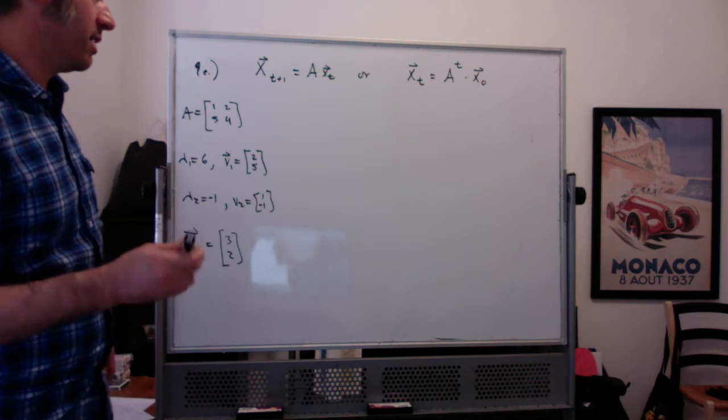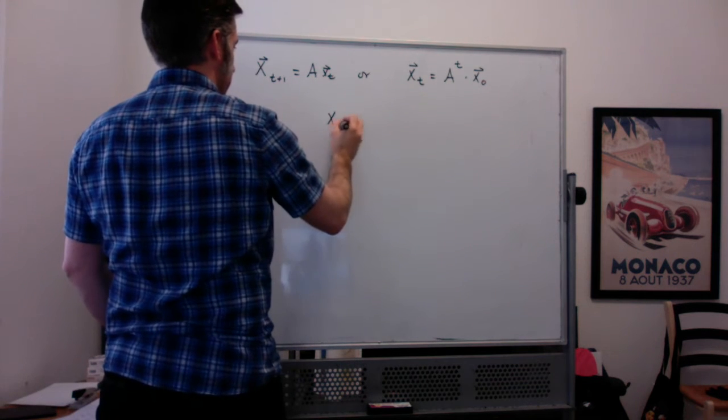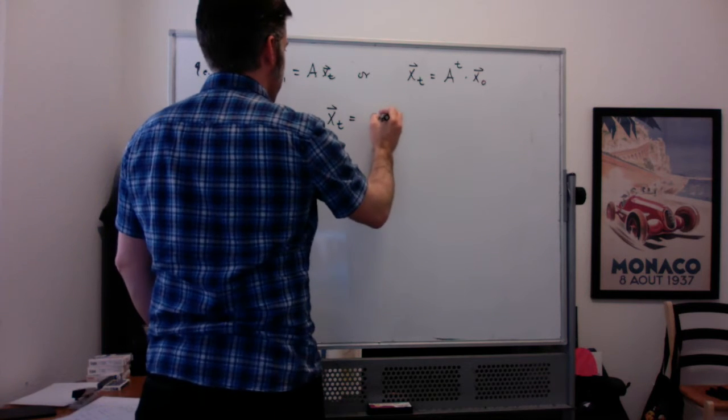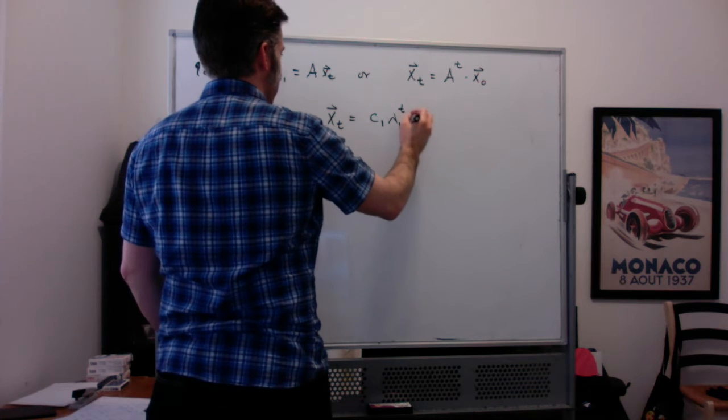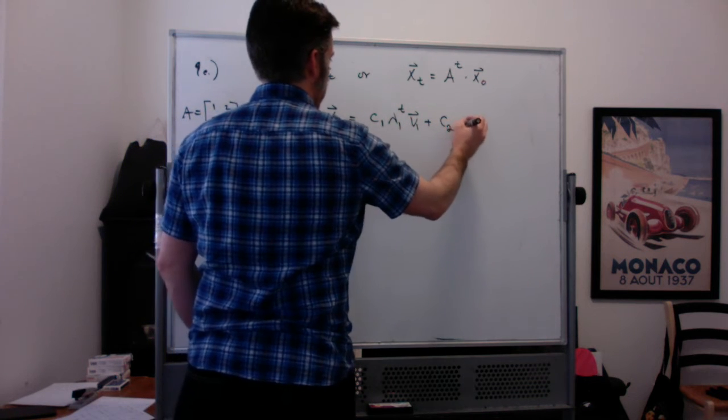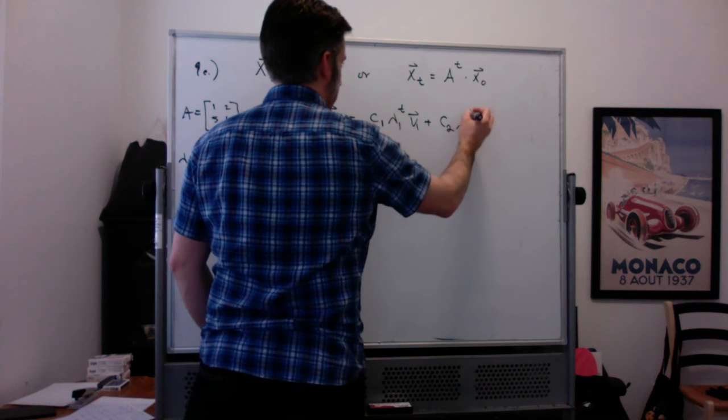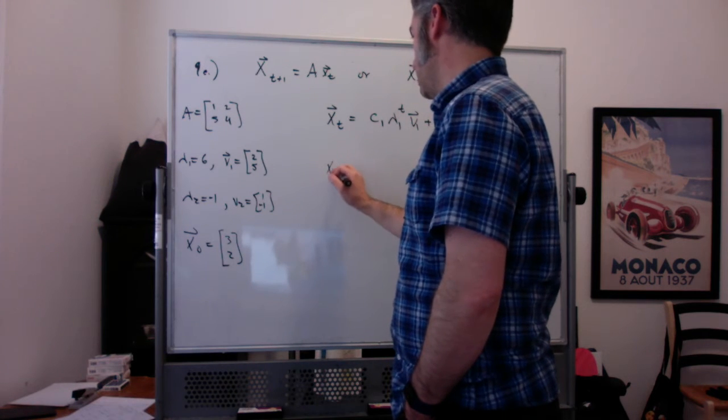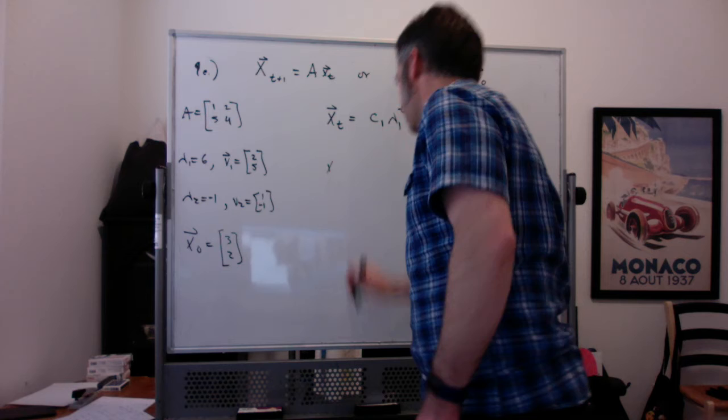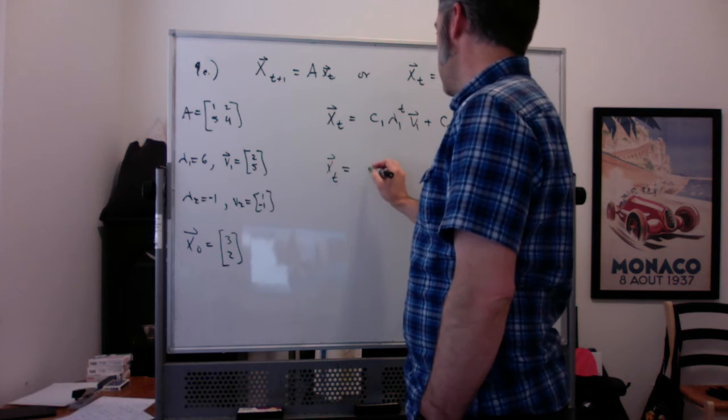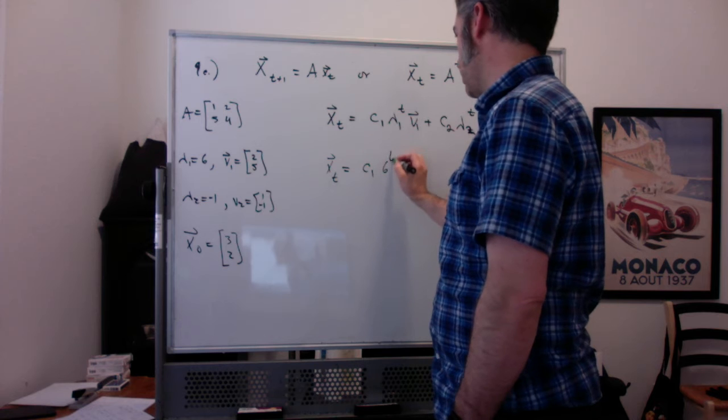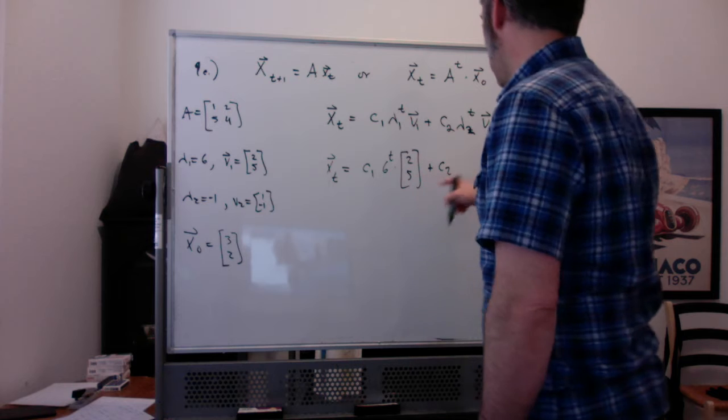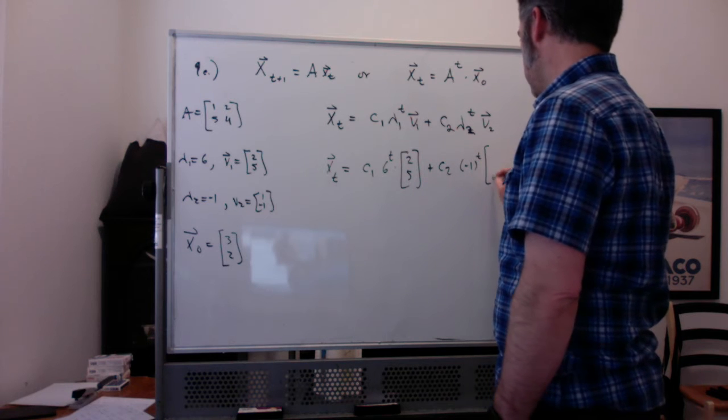So the thing you want to remember is that the whole idea is that you can write x sub t, you can do it with a diagonalization, but that's not how I'm going to do it. I would think of it as c1 lambda 1 to the t v1 plus c2 lambda 2 to the t v2, which very generally is telling us that x sub t is equal to c1 times 6 to the t times v1, which is 2, 5, plus c2 times negative 1 to the t times v2, which is 1, negative 1.